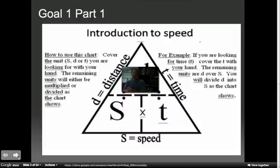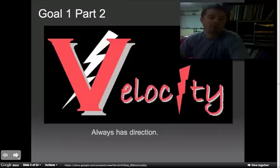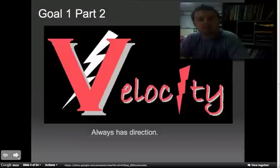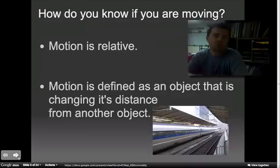So as long as we have this triangle, and it will be given to you at any point in time you need it, you can solve for any of the equations. The key thing is, can you label the items correctly? The second part is, what's the difference between speed and velocity? Now that we're paying attention to velocity, we need to make sure that we know and we can identify what those two different things are.